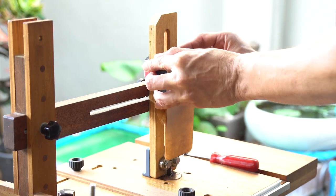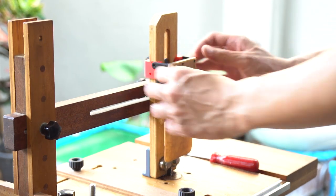Attach the hinge to the clamp and secure it with an M3 knob on both sides.